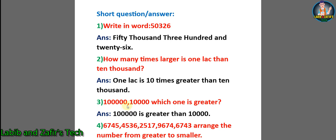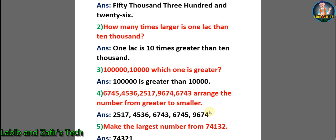1 lakh and 10,000 — which one is greater? If we see, there are 5 zeros in 1 lakh and there are 4 zeros in 10,000. So, we can say that 1 lakh is greater than 10,000. Number 4: Given the numbers 6,745 / 4,536 / 2,517 / 9,674 / 6,743 — arrange the numbers from greater to smaller.